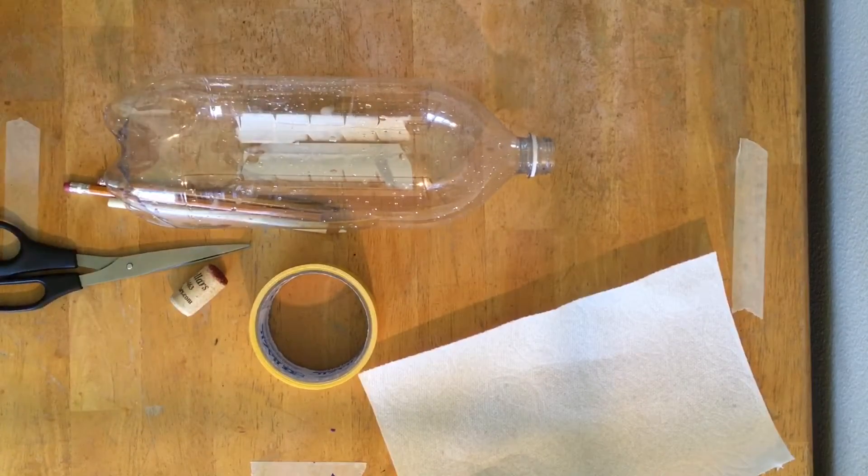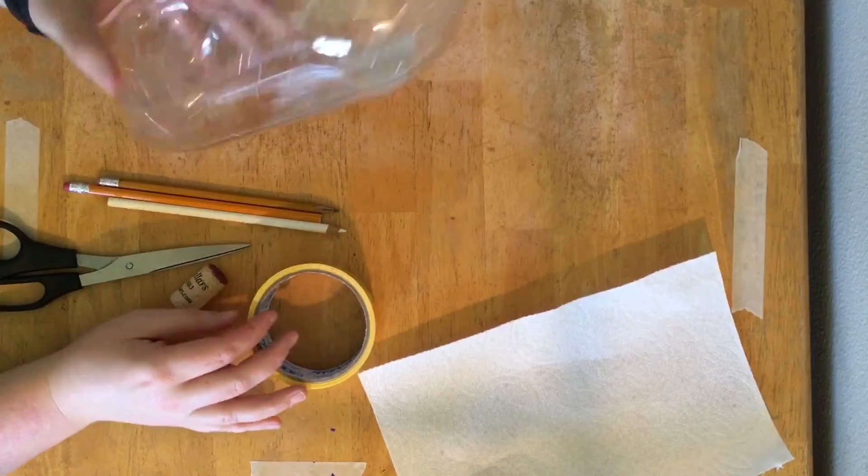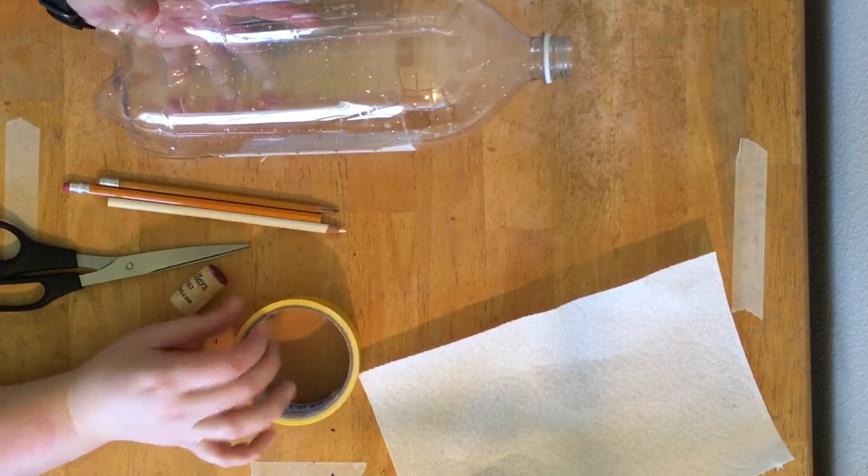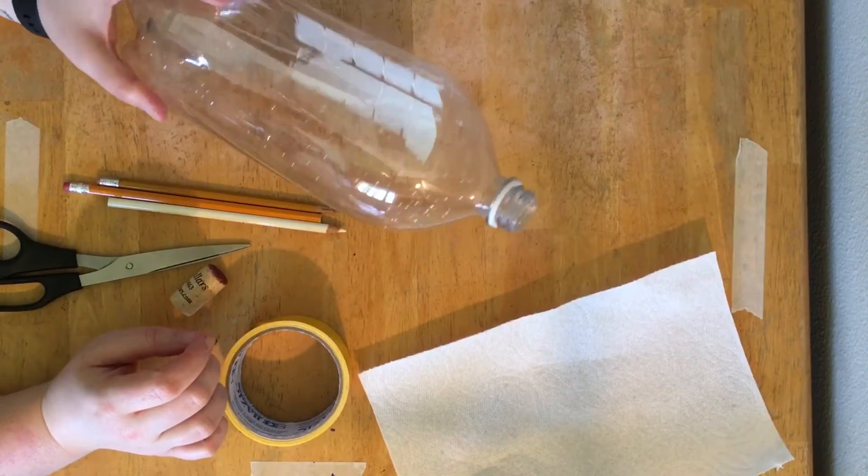Hi everyone, Librarian Jennifer back with another episode of STEAM at Home. Today we are going to be making bottle rockets. So if you have the space to launch a rocket pretty high up in the sky outside, stick around and I will show you exactly what to do.